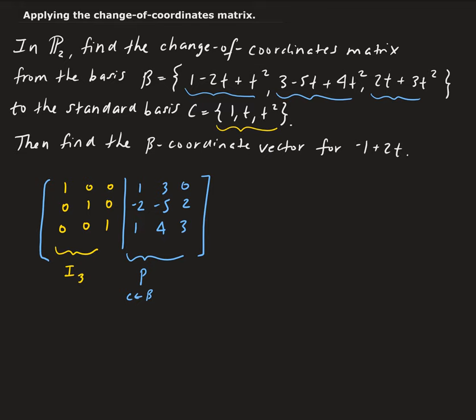Now we need to find the change of coordinates matrix from C to beta. We can do that by taking the inverse of this matrix that we found. So the change of coordinates matrix from C to beta is going to be the inverse of the change of coordinates matrix from beta to C.